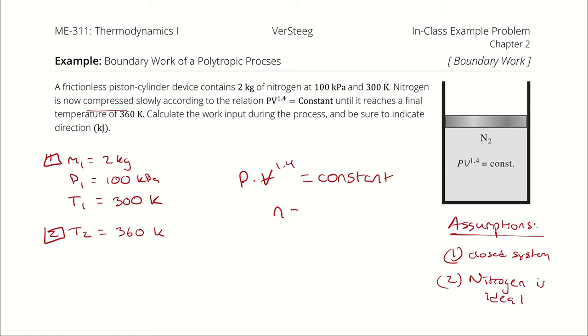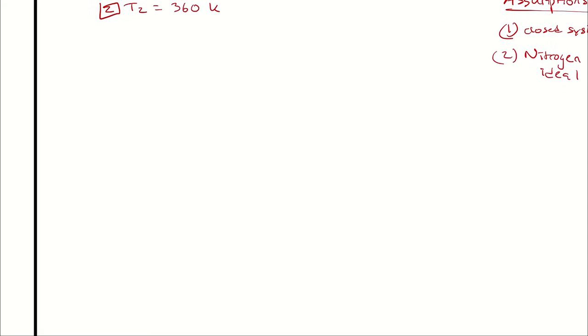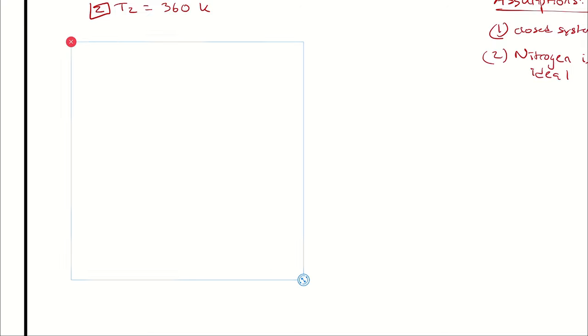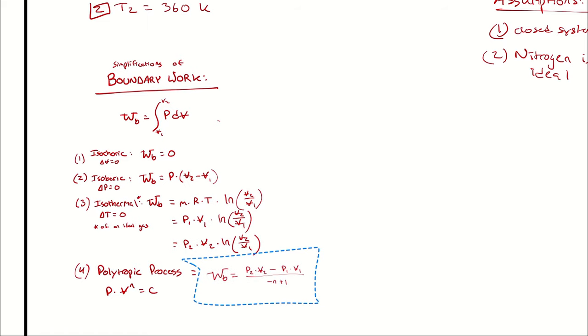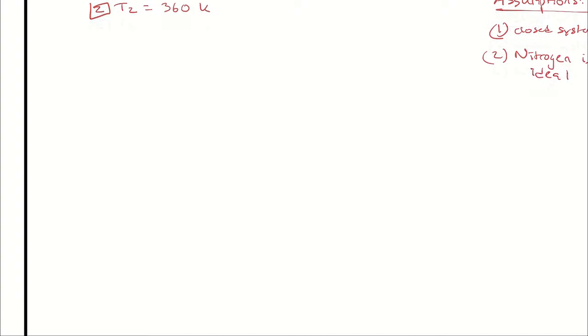That n value of 1.4 is specific to this process, but we had already solved through how the boundary work of a polytropic process simplifies. We say the boundary work of a polytropic process is P2V2 minus P1V1 divided by negative n plus 1.